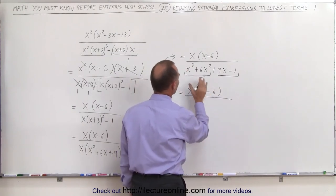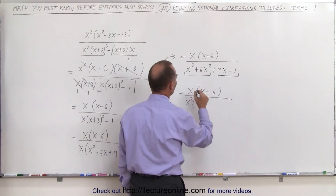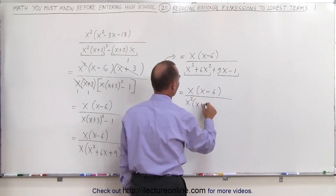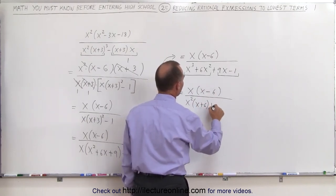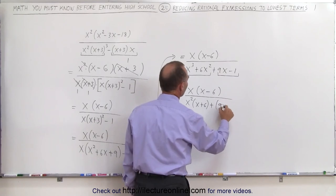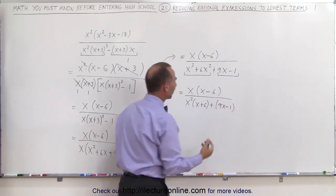and here I can factor out an x squared, and I'm left with an x plus 6. And here, there's nothing I can factor out, so this becomes a 9x minus 1.